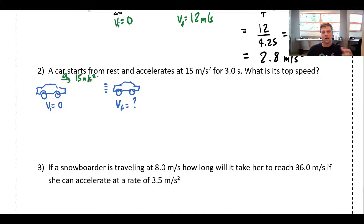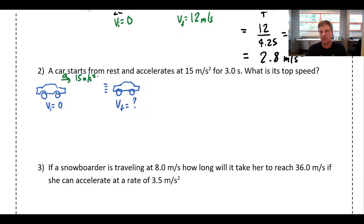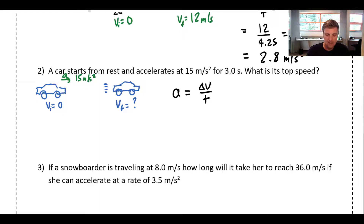Think about what that means: if something speeds up at 15 meters per second per second, every second that goes by it's going 15 meters per second faster. After one second it's going 15, after two seconds 30, after three seconds 45. You can rationalize this intuitively, and then we'll use the equation a = Δv/t to confirm — we'll probably end up with the same answer.